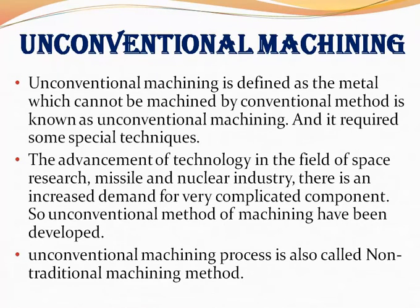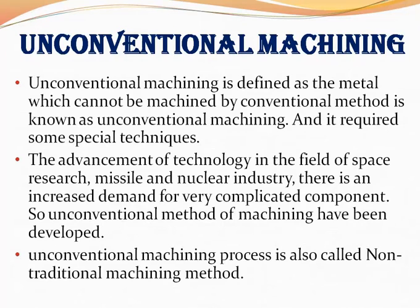Unconventional machining is defined as: the metal which cannot be machined by conventional method is known as unconventional machining. Such metals whose machining by conventional method is not possible — the machine used for machining that type of metal is called unconventional machining, and it requires some special techniques.